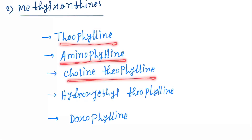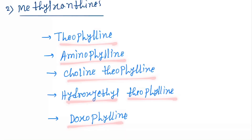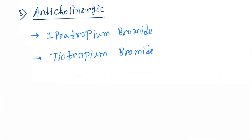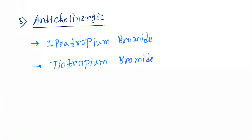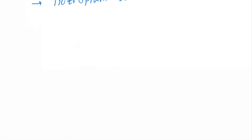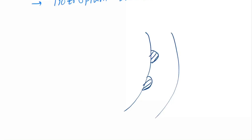The drugs under methylxanthines are theophylline, aminophylline, choline theophylline, hydroxyethyltheophylline, and doxophylline. Now coming to the anticholinergic drugs — suppose these are the smooth muscles of the bronchus, and here the muscarinic receptors are present. These receptors are M3 receptors — remember M3.